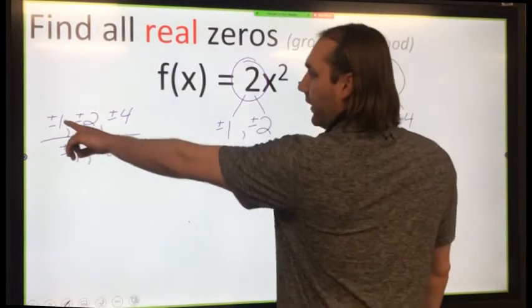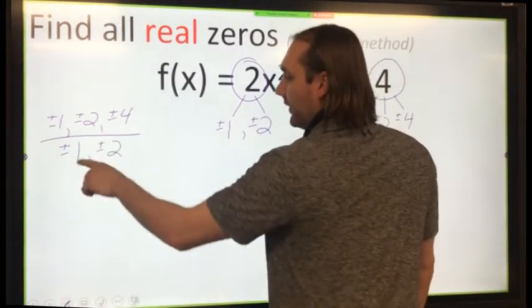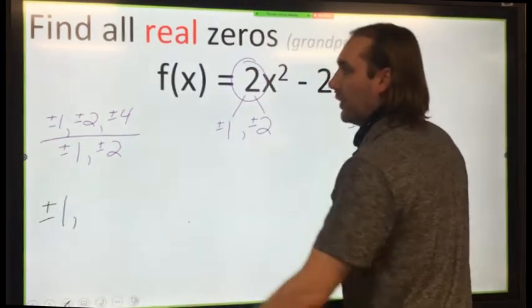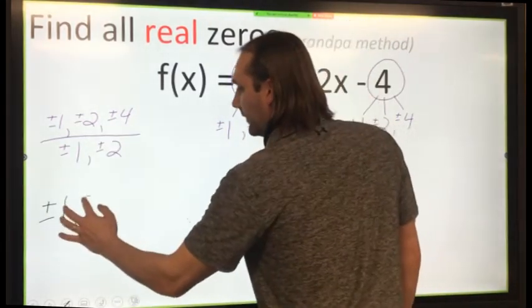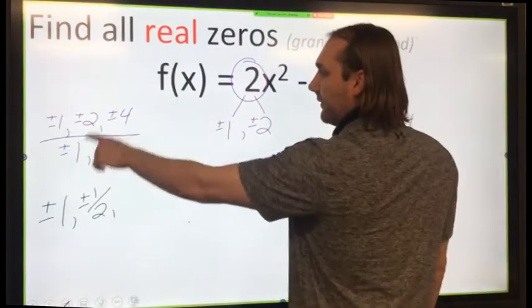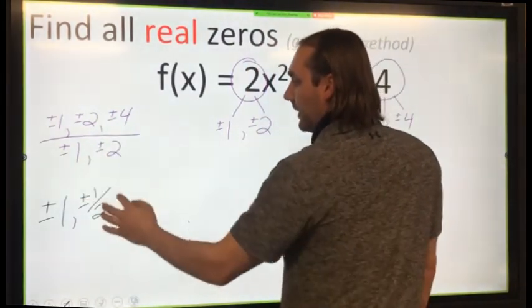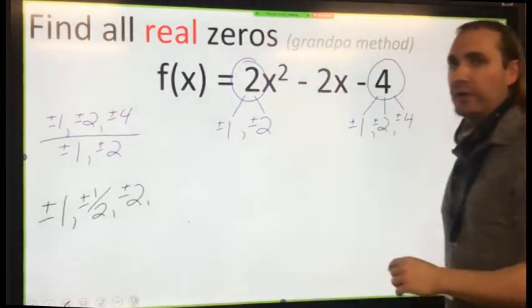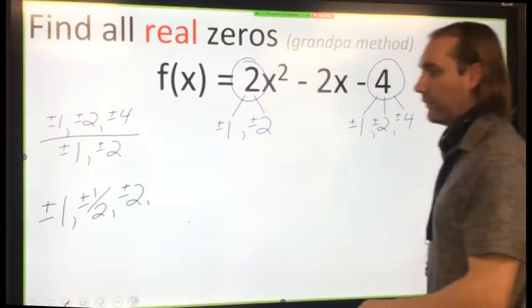So let me start looking at 1 and divide that by 1 and 2. So 1 divided by 1 is plus or minus 1. 1 divided by 2 is plus or minus 1/2. That takes care of 1. Now let me divide 2 by 1 and 2. So 2 divided by 1 is plus or minus 2, and 2 divided by 2 is 1, which I already have, so no point in rewriting that twice.